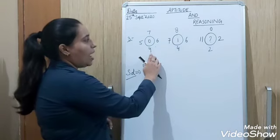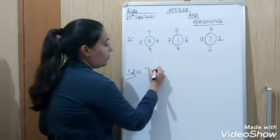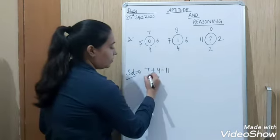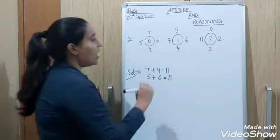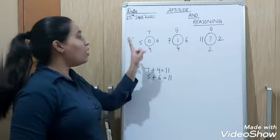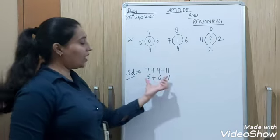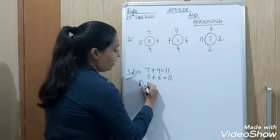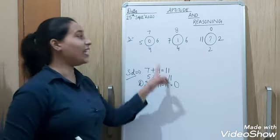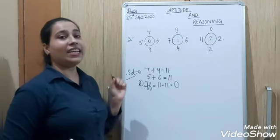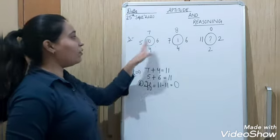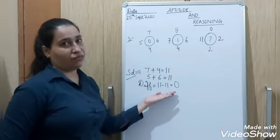7 plus 4, you add, 7 plus 4 is what? 11. Now 5 plus 6 is what? 11. You added the top and bottom numbers, that is 11. Then you added the left and right numbers, then you got 11. Then you will find the difference. 11 minus 11. After that, what did we do? We found the difference. So difference is 0. That means how did we get the number inside the circle? First you added the top and bottom numbers, then you added the left and right numbers, then you found their difference.